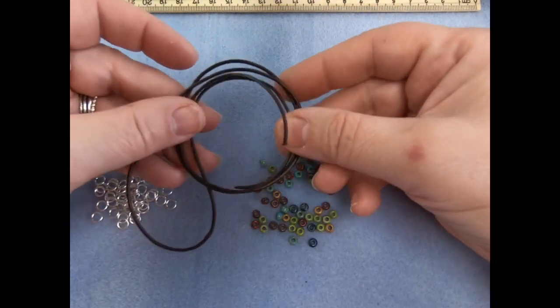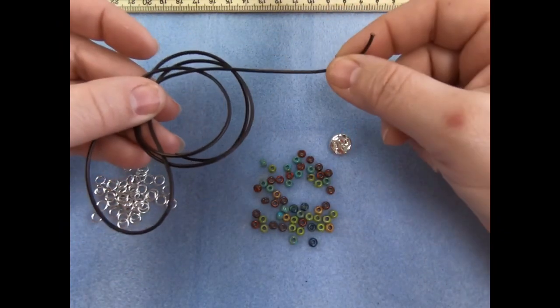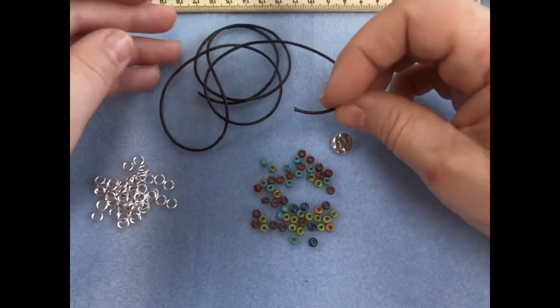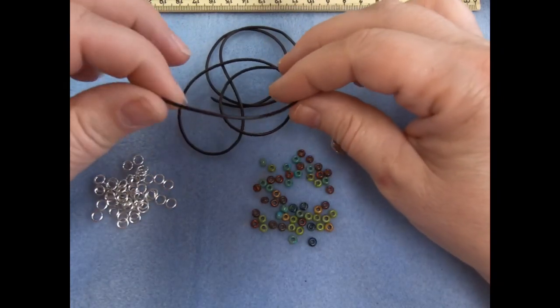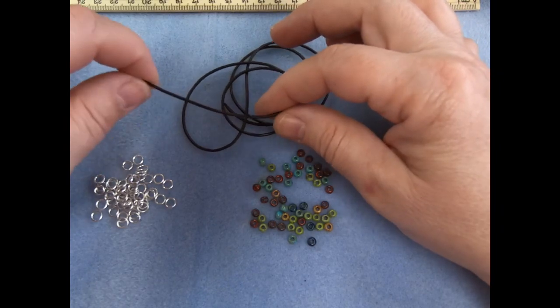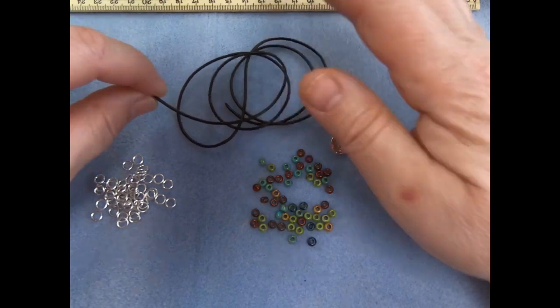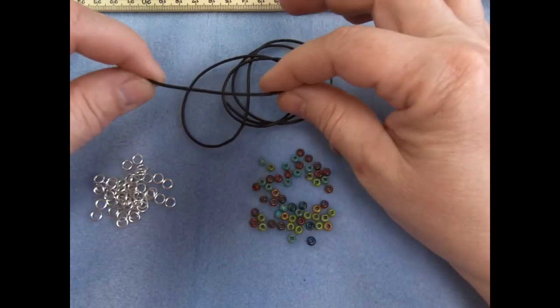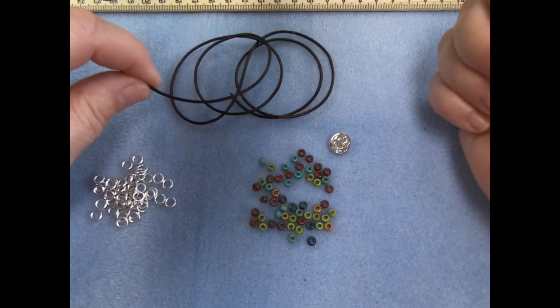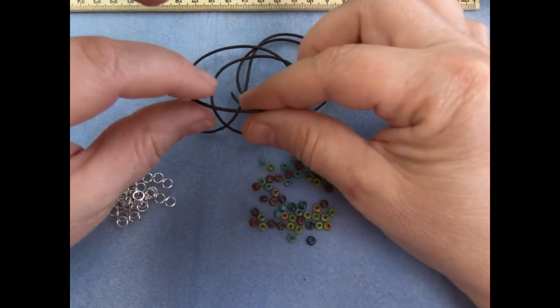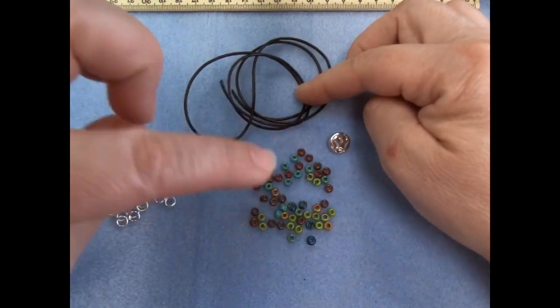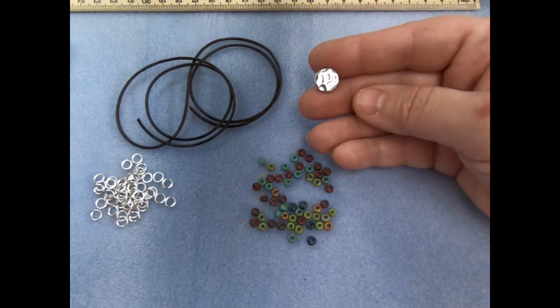This is 1.5mm leather. You can also use 1mm leather. Leather being a natural product does have some variations in size. The industry allows them to be 0.3mm off. So 1.5mm leather could be 1.8mm, which is generally too big to get through these holes, or it could be thinner like 1.2mm. You really need to check the leather with the hole size that you've got.